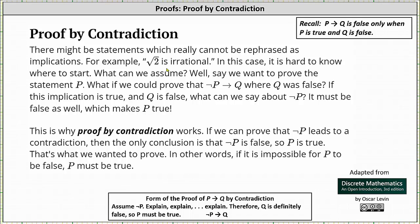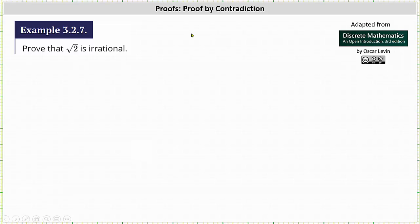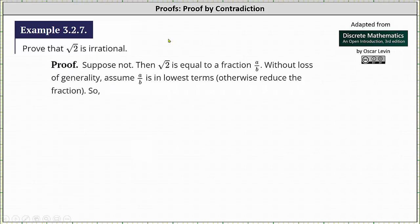Let's look at the proof of the square root of 2 is irrational using proof by contradiction. Because we're using proof by contradiction, we suppose the square root of 2 is not irrational, meaning square root 2 is rational. Then square root 2 is equal to a fraction in the form of a over b. Without loss of generality, we will assume the fraction a over b is in lowest terms or simplified. Otherwise, simplify the fraction. So we can say that the square root of 2 is equal to a over b.